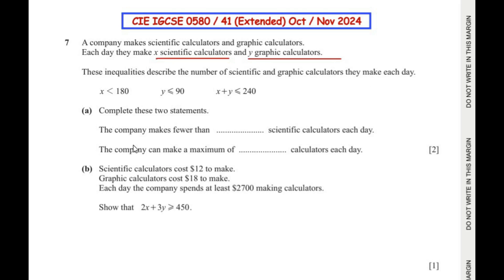Complete these two statements. The company makes fewer than 180 scientific calculators each day, using the inequality x < 180. Similarly, the company can make a maximum of 240 calculators each day, since x plus y is less than or equal to 240, so the maximum total is 240.